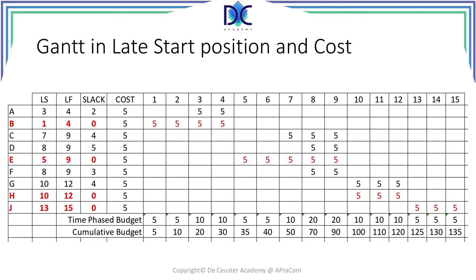We expanded task F, making it one period longer. So now we have a task of 3 periods with a cost of 10K, which gives us 10 divided by 3 — that is 3.333 per time unit. Take that information, complete the new situation — the Gantt in planned start position — and stop the presentation until you're finished, then we compare the solutions.